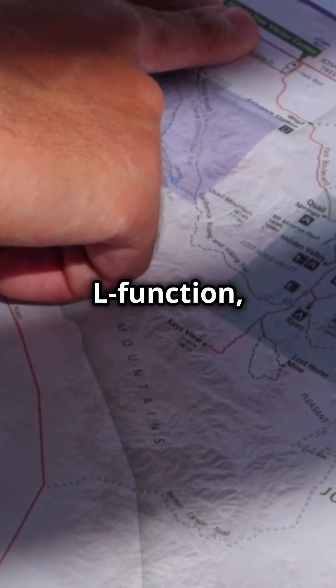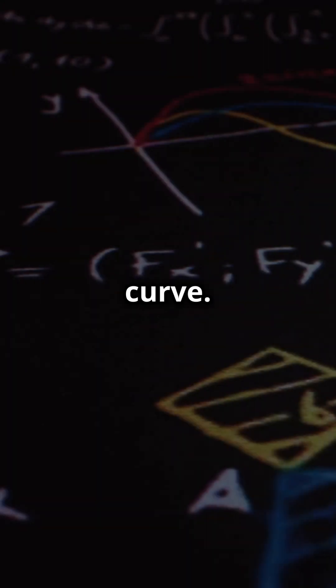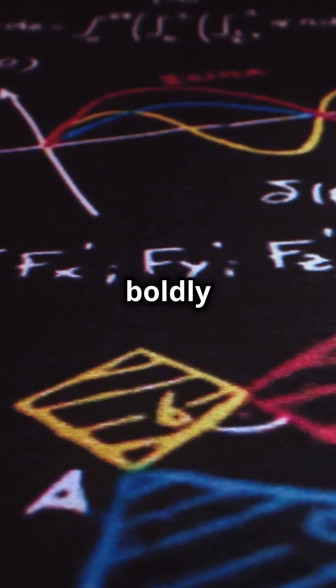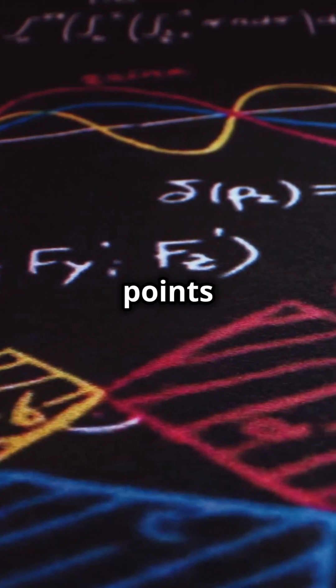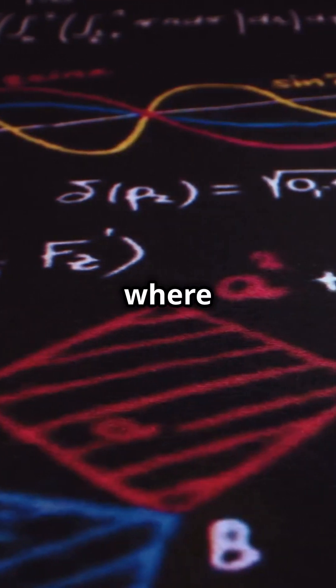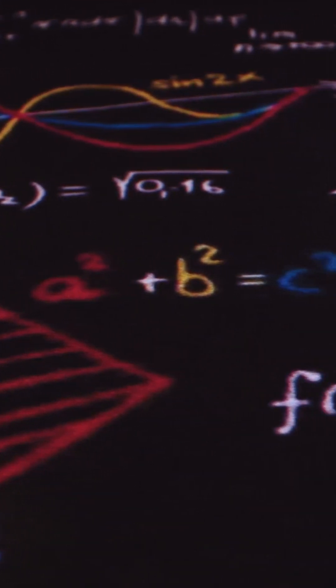Enter the L function, a math wizard's tool to decode secrets about the curve. The conjecture boldly claims that the number of these rational points is tied to a magical number where the L function vanishes at S equals 1.